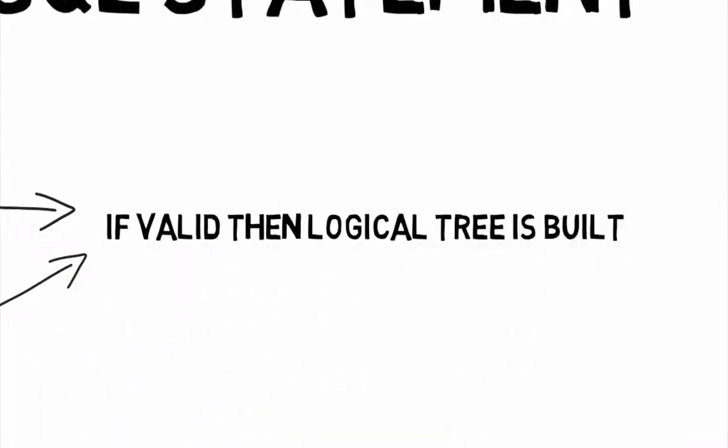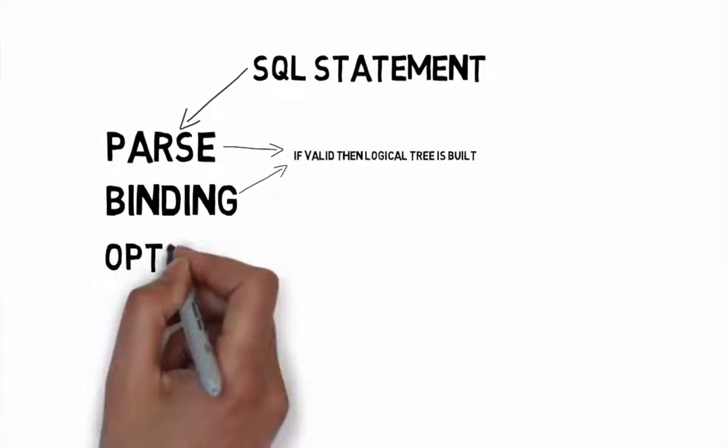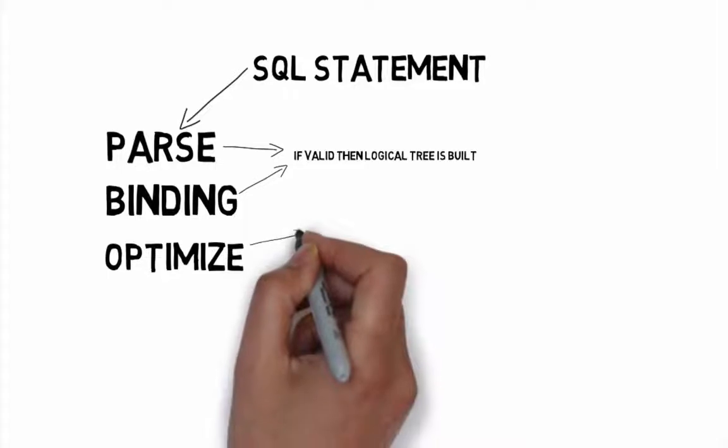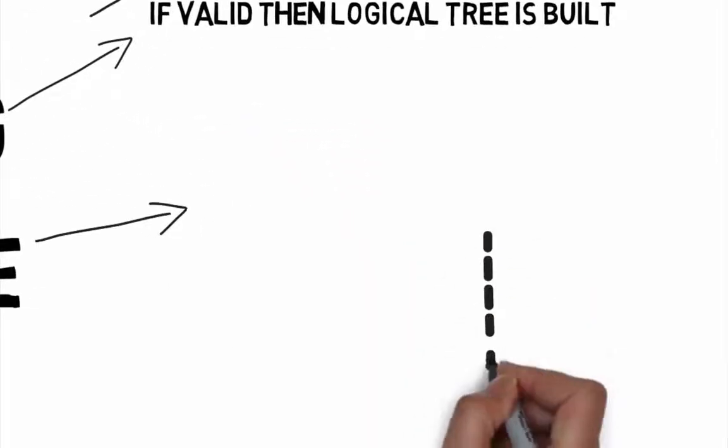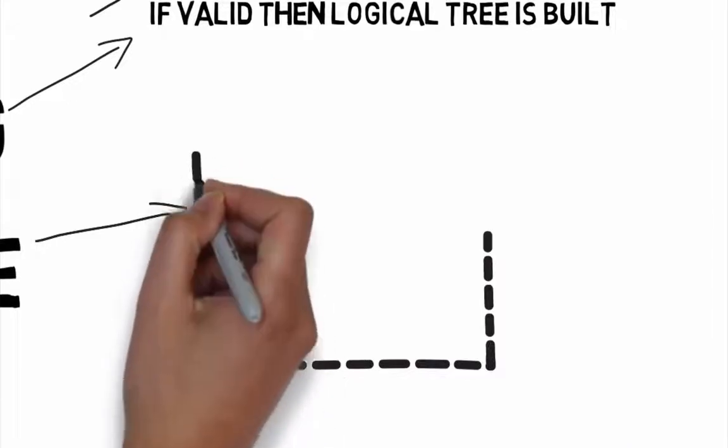Binding is mostly concerned with name resolution. During the binding operation, SQL Server makes sure that all the objects do exist and associates every table and every column on the parse tree with their corresponding object in the system catalog.